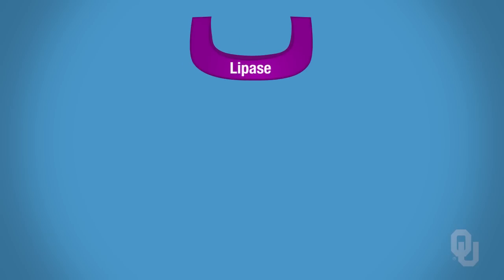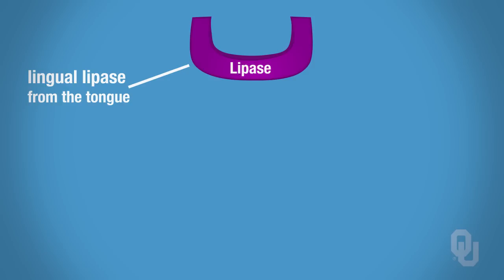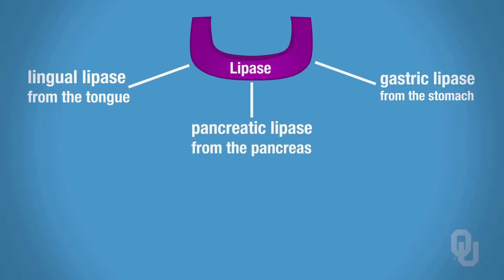The enzymes that are necessary for lipid digestion are called lipase. We have three different types of lipase. There is lingual lipase, secreted from the mouth. We also have gastric lipase, secreted from the stomach. And then we have our third enzyme, which is perhaps our most important one, and that's pancreatic lipase, which is secreted from the pancreas.